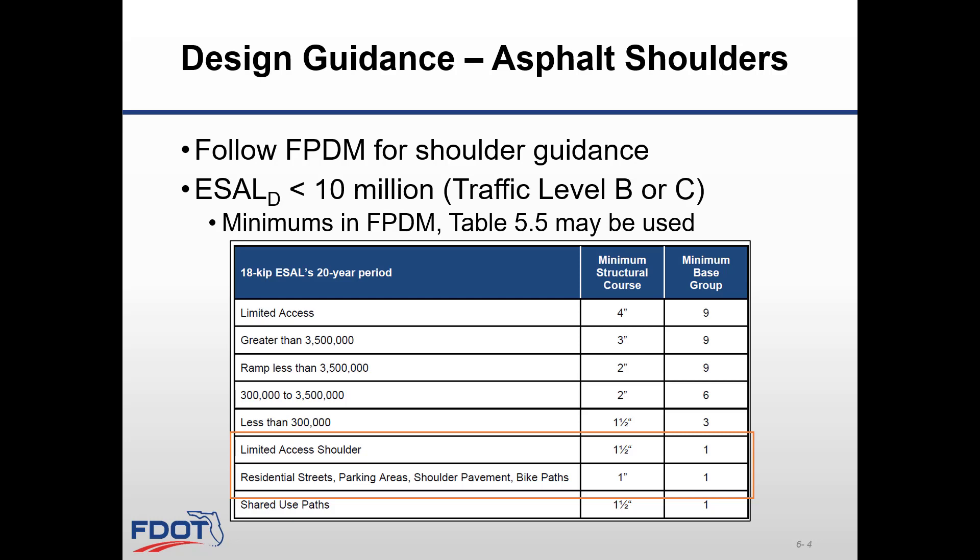A typical design would be 1.5 inches of structural course with an OBG-1 for a limited access shoulder, and 1 inch structural with OBG-1 for a non-limited access shoulder. Remember that FC 12.5, which is 1.5 inches, and FC 9.5, which is 1 inch, can be considered a structural course.